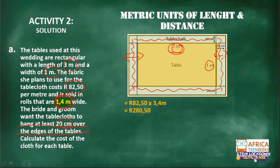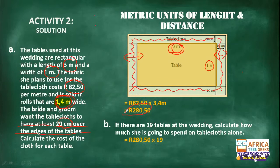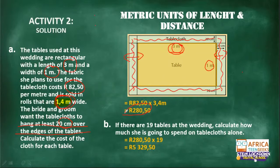Our time is up but I just want to quickly finish this one — we can look at this further tomorrow. Part B: if there are 19 tables, calculate how much she is going to spend on tablecloths alone. We take R280.50 per tablecloth times 19 tables, and that gives us a total of R5,329. I want to thank you guys for coming and trying — that is the most important part. The more we practice, the easier it will become.